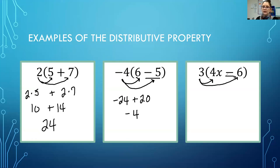Again I'm going to underline my negative 6, my subtract 6, and think of it as negative 6. So 3 times 4 is 12, bring your x, 3 times negative 6 is negative 18.